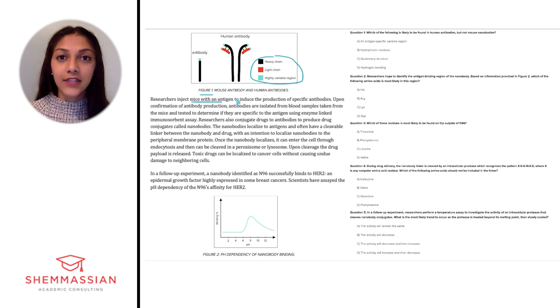researchers inject mice as an antigen to induce the production of specific antibodies. Upon confirmation of antibody production, antibodies are isolated from the blood samples taken from the mice and tested to determine if they are specific to the antigen using enzyme-linked immunosorbent assay.